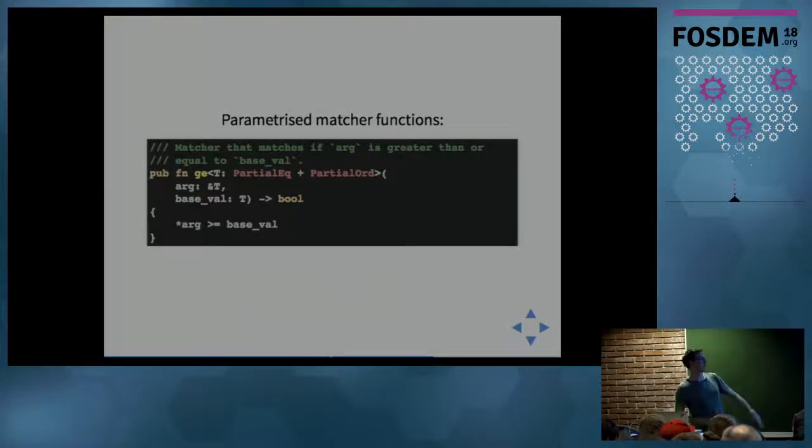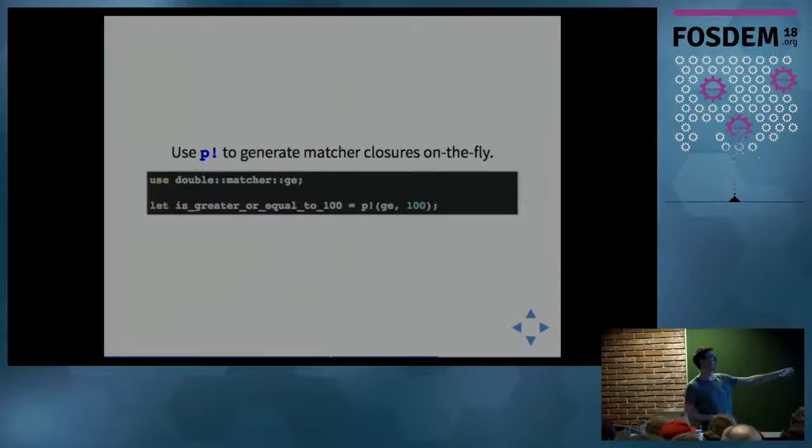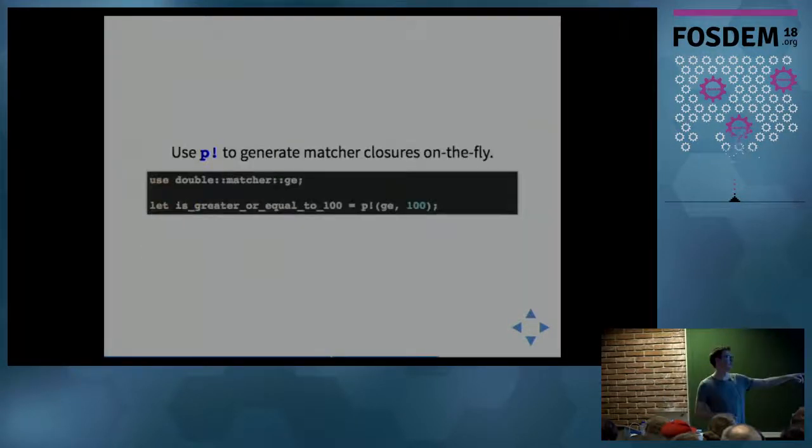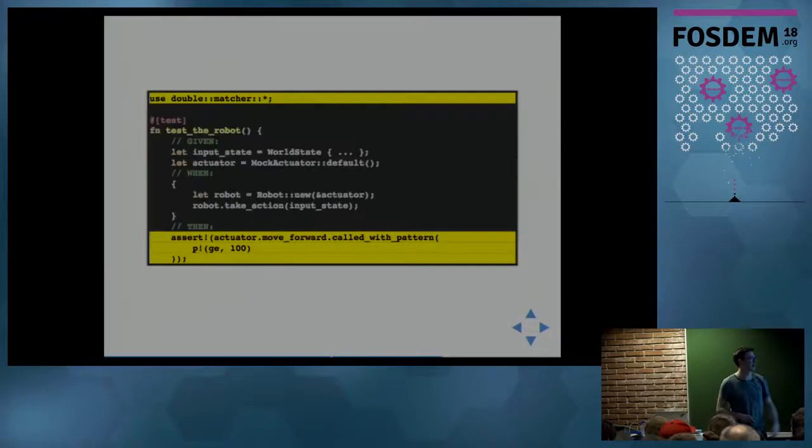Now, instead of manually writing all of our matchers, we can just use a macro called p, which is defined in double, to basically generate these matching closures for us. This generates matching closures on the fly by saying take this parameterized matcher ge and then 100. What this code looks like is pretty much the same. We have p!ge(100) as the matcher.